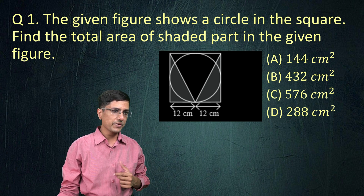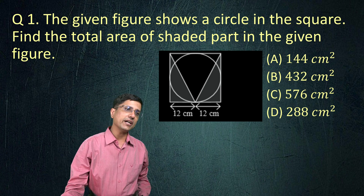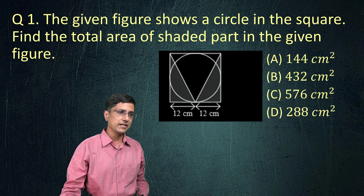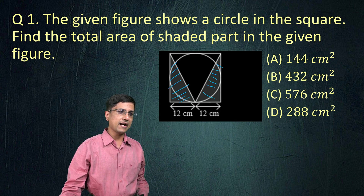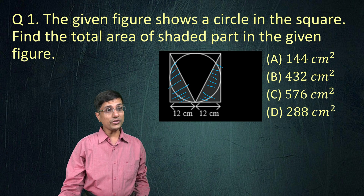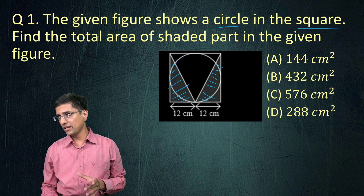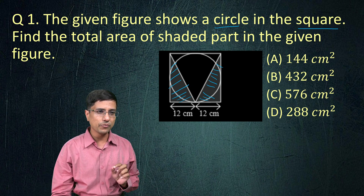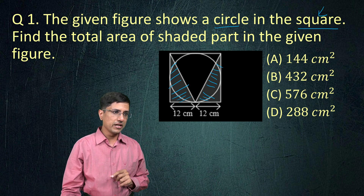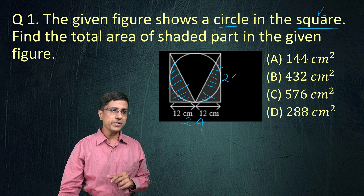We should try to score well in it. The question is asking us to find out the area of the shaded region. The shaded region is these two triangles right here. The question also tells us that there is a circle inside a square. The key here is the word square. Square means that if this side is 12 plus 12, which is 24, then this side would also be 24.